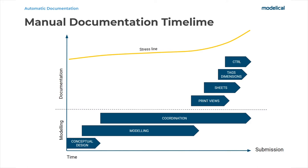Let's imagine a BIM collaborative design project from the architecture discipline, for example, where conceptual design stage starts and leads to BIM modeling and coordination. At some point models are frozen to have time to coordinate all disciplines, and that's where the documentation part begins. We create print views with view templates, we create sheets with their parameters, we place the views on the sheets, we tag and dimension, and finally we make a control of all the documentation before it is submitted.